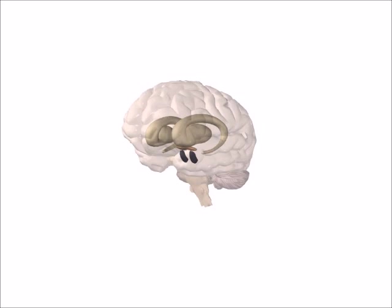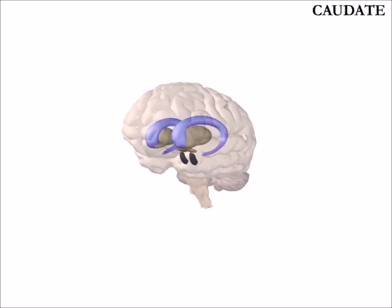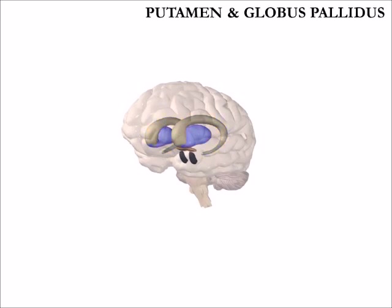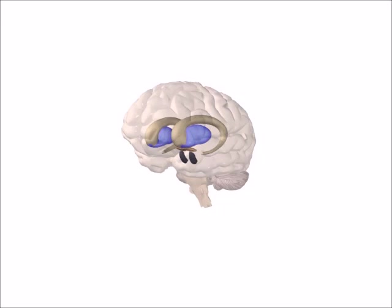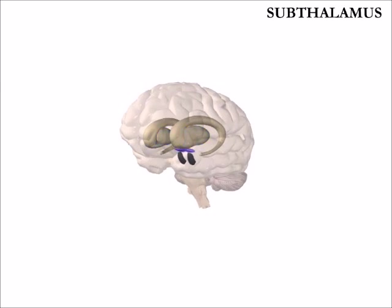The thalamus is located in the center of the brain. Like the lateral ventricles, the caudate is a C-shaped structure which becomes narrower as it extends towards the back of the brain. The putamen and globus pallidus are located just above the thalamus. As suggested by its name, the subthalamic nucleus is located ventral to the thalamus. The substantia nigra is a basal ganglia structure located in the midbrain.